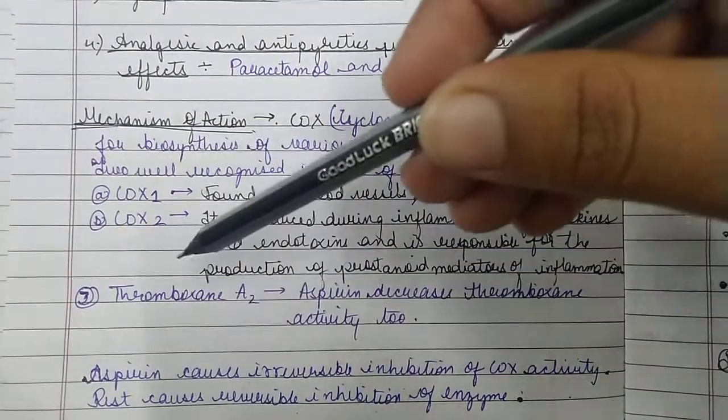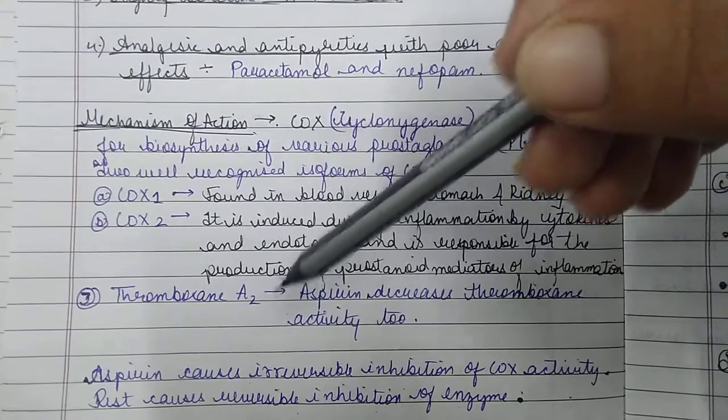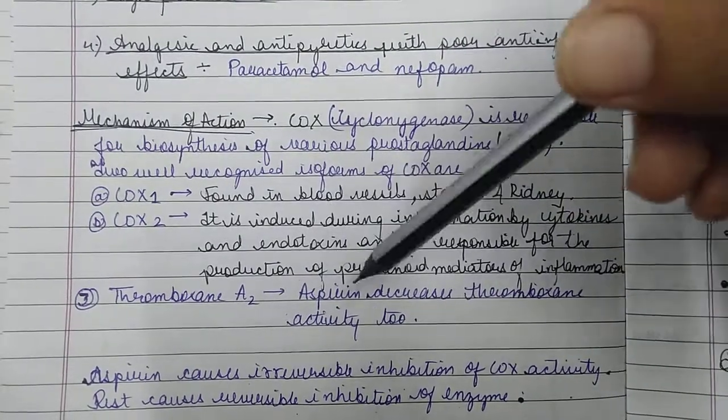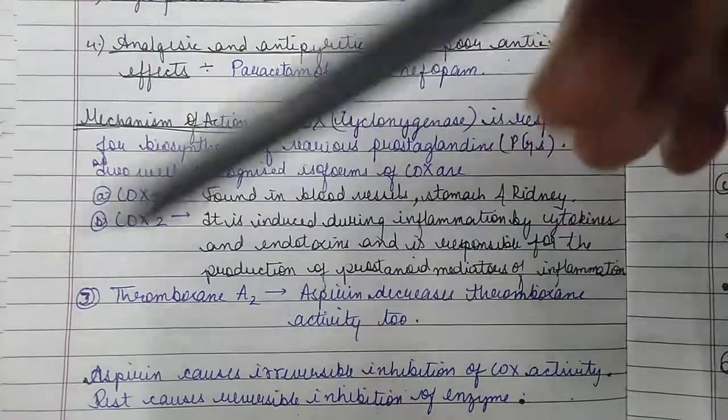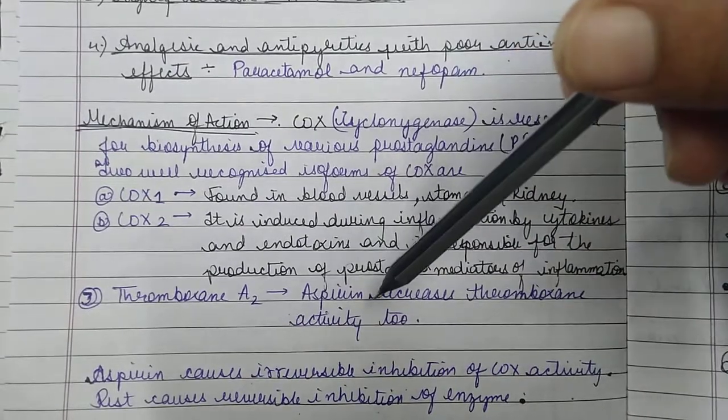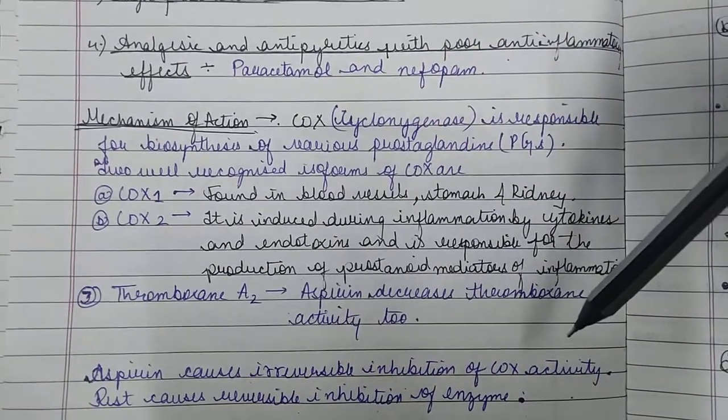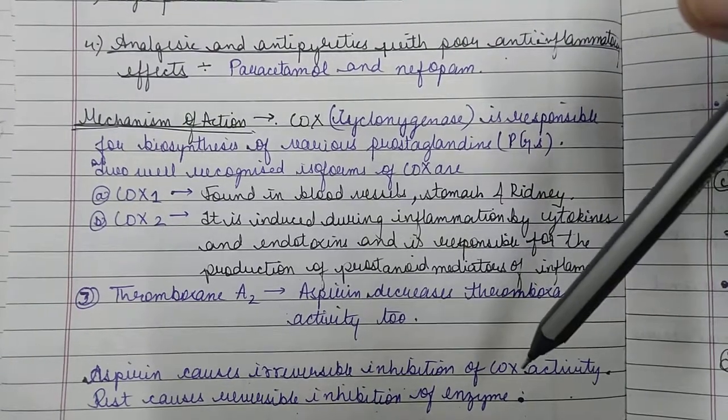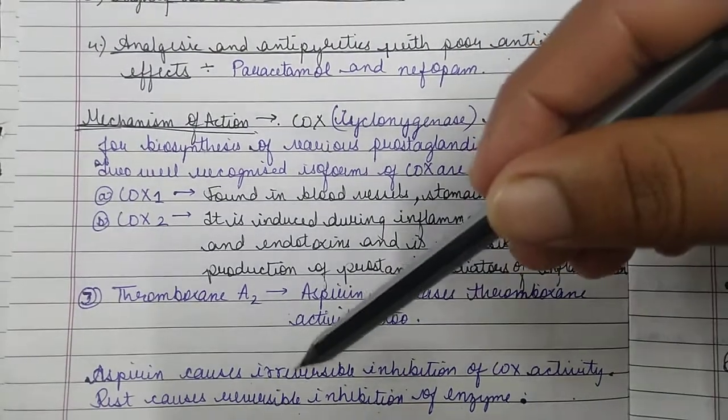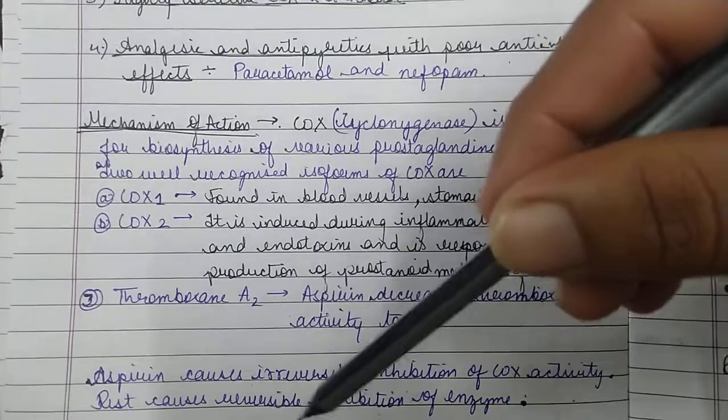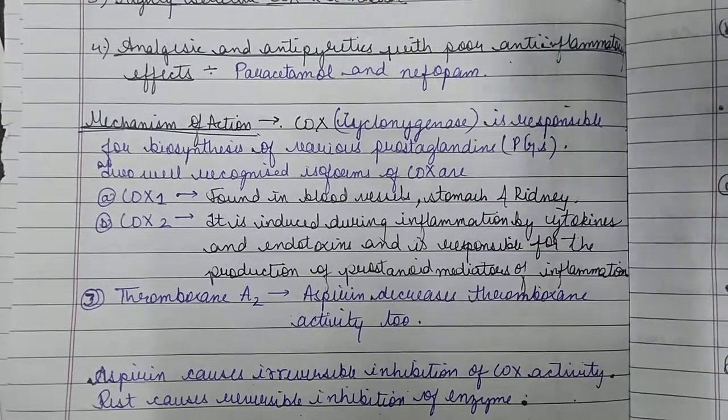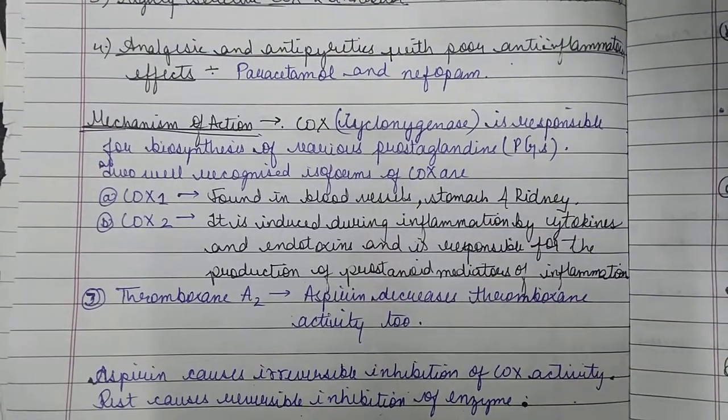Now talking about thromboxane A2, its activity is decreased by aspirin. Aspirin causes irreversible inhibition of COX activity. That is a very important point - it causes irreversible inhibition, and the rest cause reversible inhibition of the enzyme.